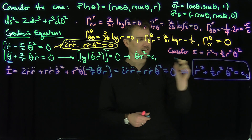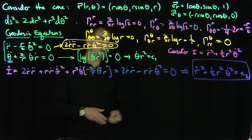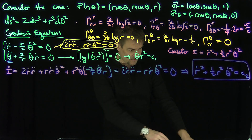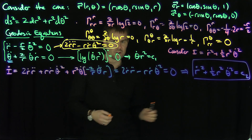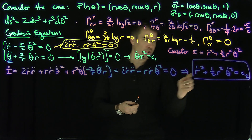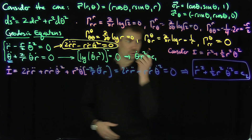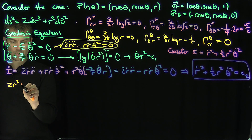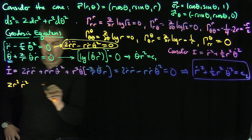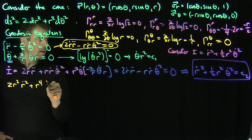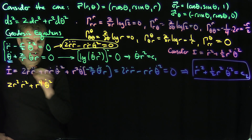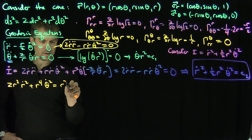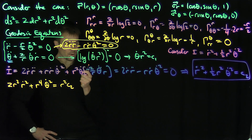So I have two invariants, and I can use them to parameterize the curve — a two-parameter family. Now I'll multiply the second invariant equation by 2r², giving 2r² ṙ² + r⁴ θ̇² = c₂ r², where I've incorporated the constants appropriately.